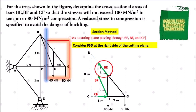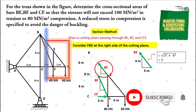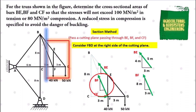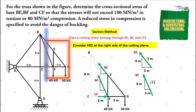The next step is to solve for the hypotenuse of the slopes in bars BE and BF. For bar BE, given the slope of 3 and 4, we simply use the Pythagorean theorem: the square root of 3 squared plus 4 squared, which gives us 5. For bar BF, the slope is 3 and 8, so using the Pythagorean theorem: the square root of 3 squared plus 8 squared, which gives us the square root of 73.